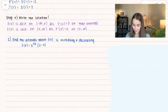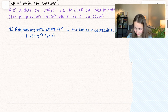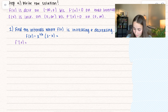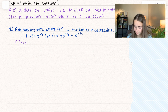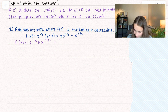Let's work through a new example. Find the intervals where f of x is increasing and decreasing, given f of x equals x to the two-thirds times (2 minus x). Our first step is to find the derivative. Rather than using product rule, I'll distribute the x to the two-thirds: I get 2x to the two-thirds minus x to the five-thirds, since two-thirds plus 1 equals five-thirds. Then I'll use power rule: I get 2 times two-thirds times x to the negative one-third, minus five-thirds times x to the two-thirds.